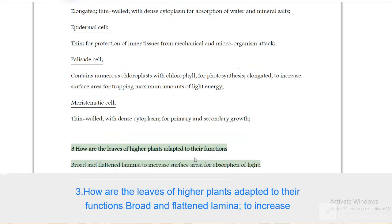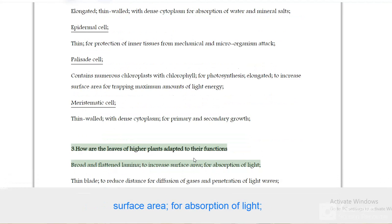How are the leaves of higher plants adapted to their functions? Broad and flattened lamina to increase surface area for absorption of light.